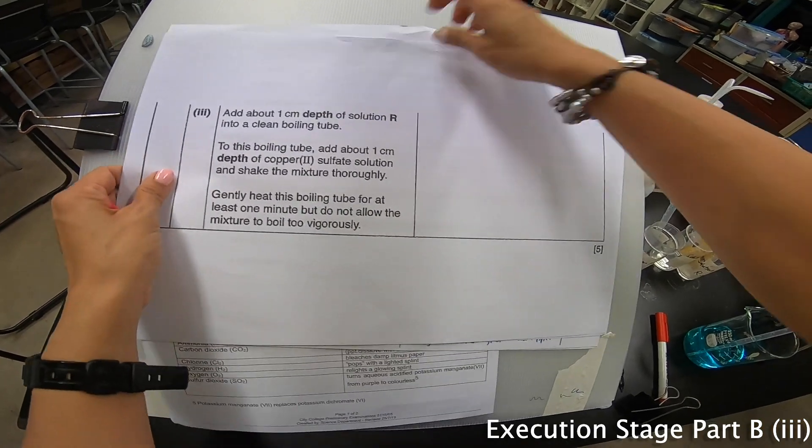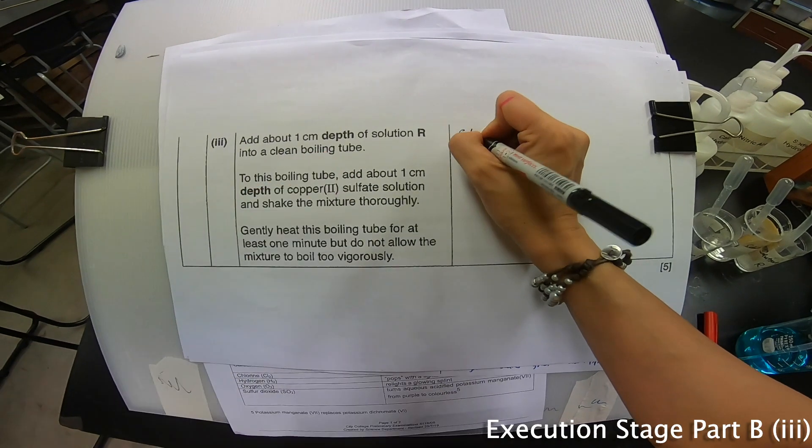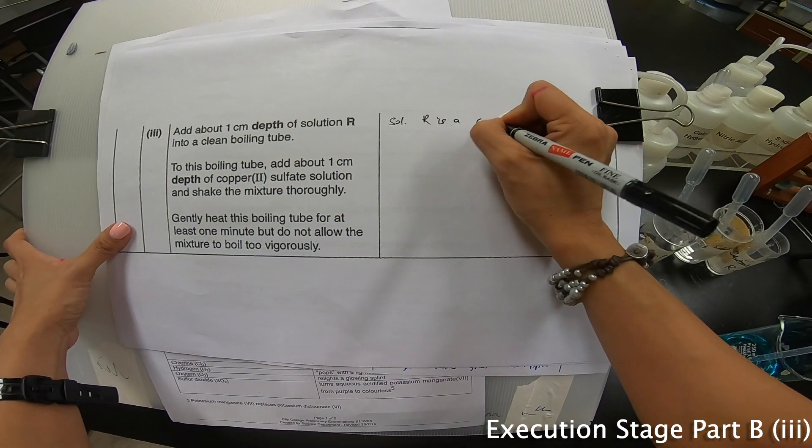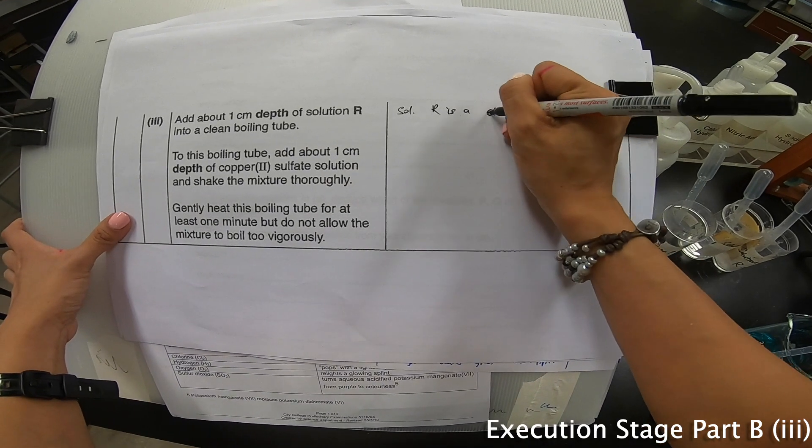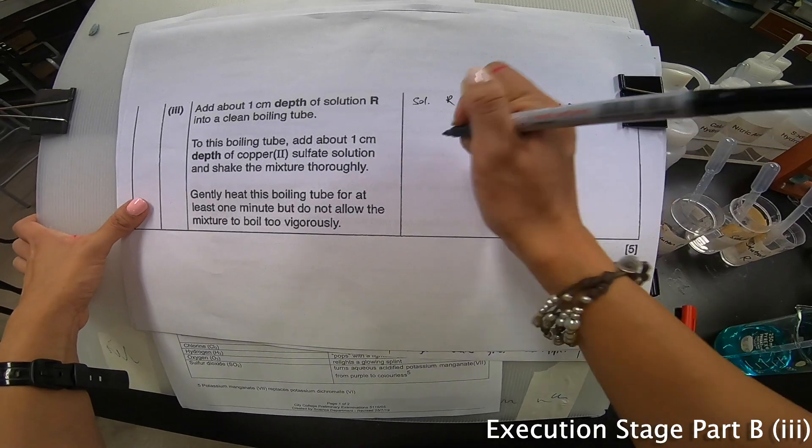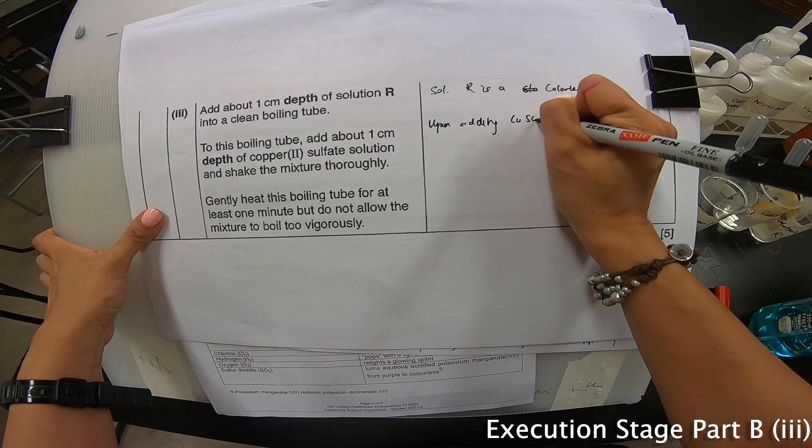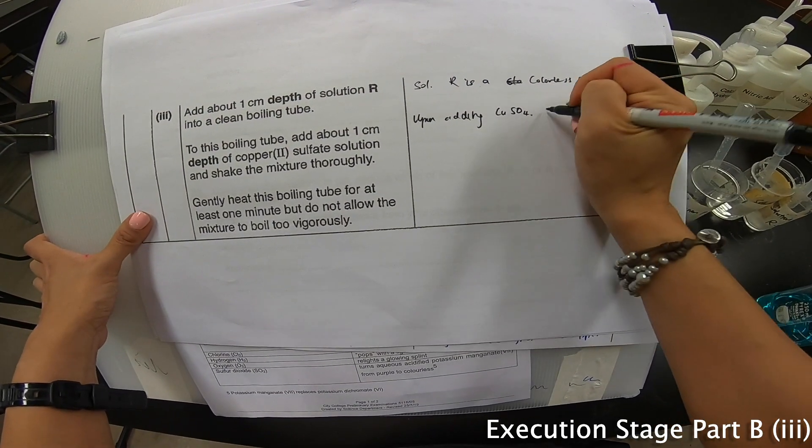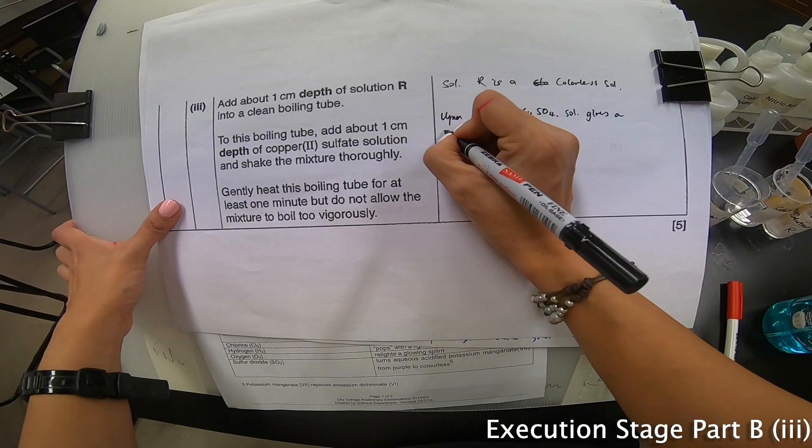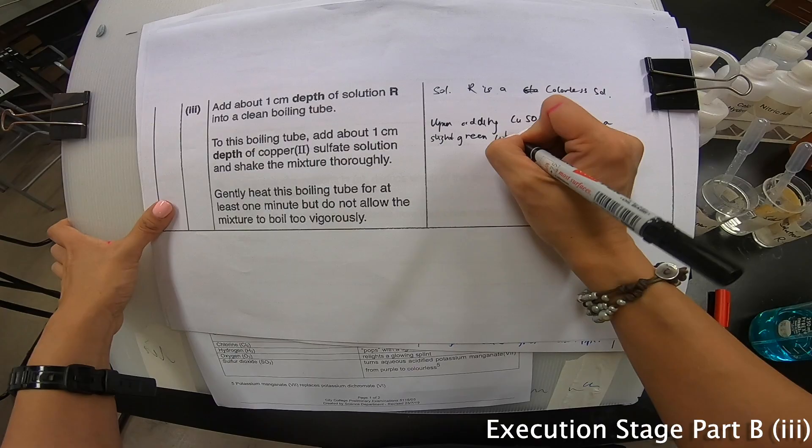And let me add a little bit of the copper sulfate. Now R is a clear solution. Upon adding my copper sulfate solution, it is still clear but the color changes a little bit. So I'm going to write it down over here first. But before I do anything, let's take a look at the boiling process. So it's boiling, it's boiling, and it's changing a little bit of color.